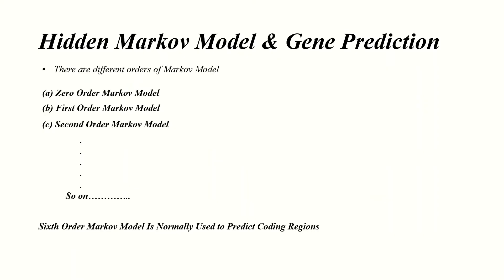There are different orders of hidden Markov model, known as the zero order Markov model, first order Markov model, second order Markov model, and so on. In the zero order Markov model the occurrence of an event is independent of any previous event, which indicates total randomness. The non-coding regions show the zero order Markov model because in these regions the occurrence of every nucleotide is independent of the previous one.